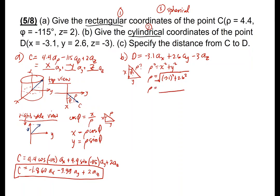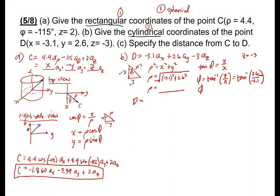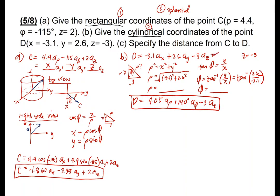For phi, we know that tangent of phi equals the opposite over adjacent, which is Y over X. So phi equals arctan(Y/X), which equals arctan(2.6 / −3.1). Having solved all of them, we have the final answer for the conversion of rectangular to cylindrical.